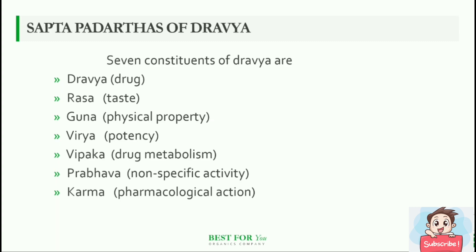Saptapadarthas of Dravya — the seven constituents of Dravya are: Dravya, Rasa, Guna, Virya, Vipaka, Prabhava, and Karma. The meanings in English are given on the right hand side.